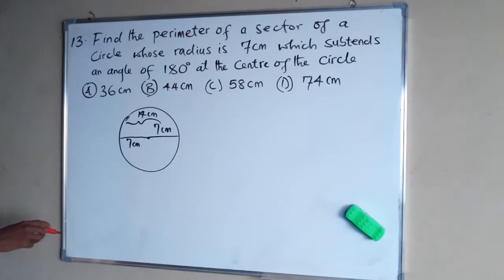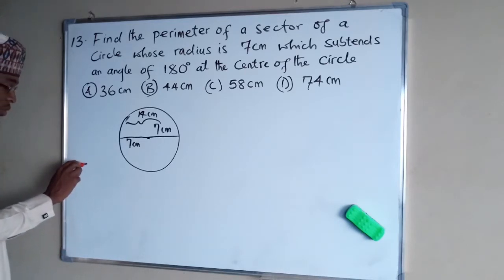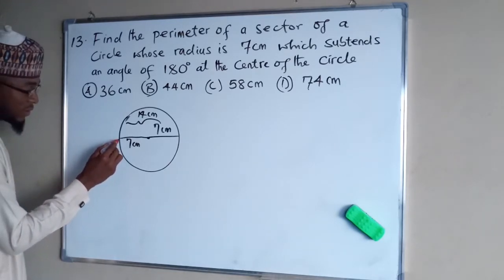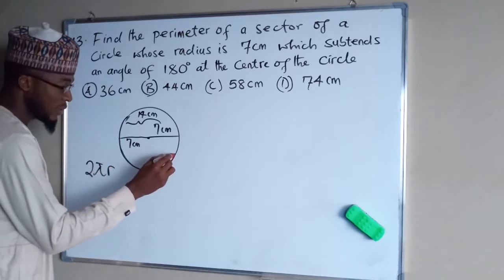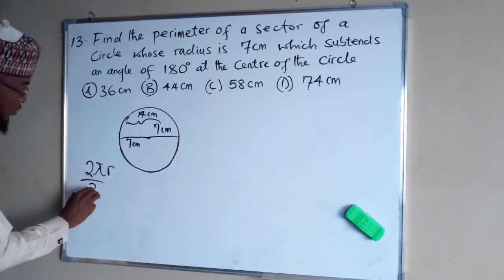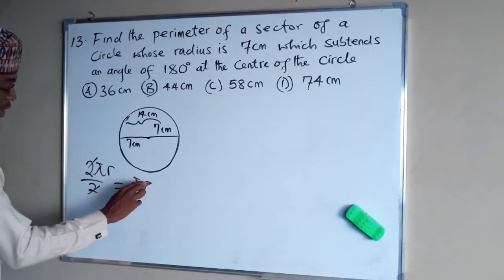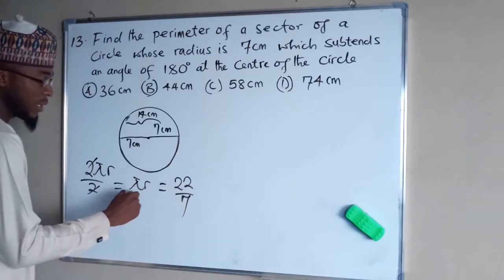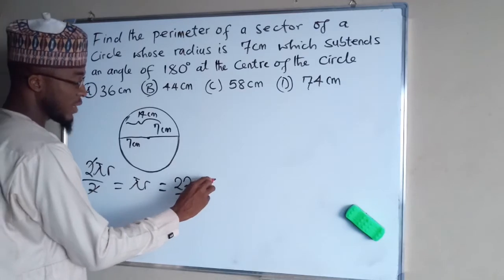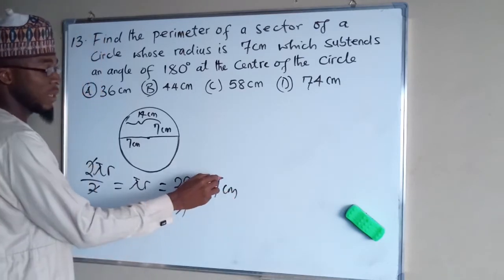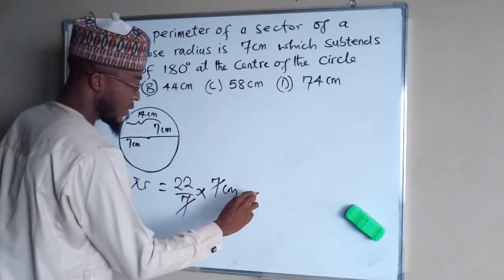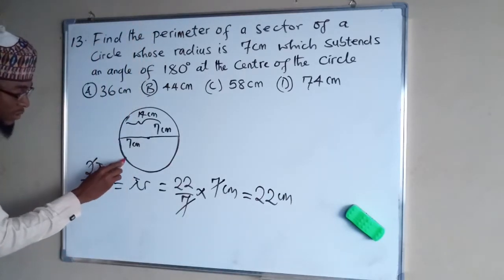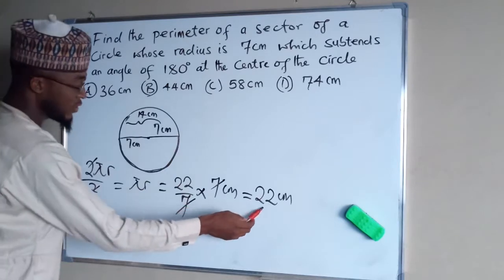The formula to find the circumference of a circle is 2πr. But since this sector is just half of a circle, we divide by 2, which gives us πr. That is 22/7 times r, and r is given as 7 cm. The 7s cancel, so we end up with 22 cm. So the arc from one end to the other is 22 cm.